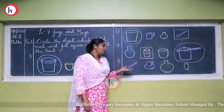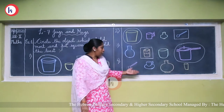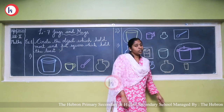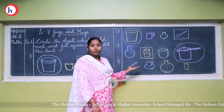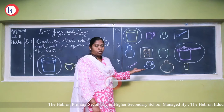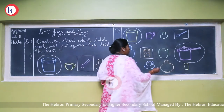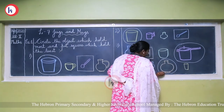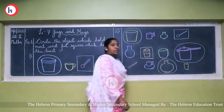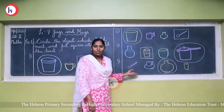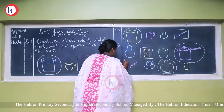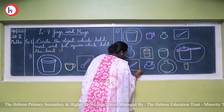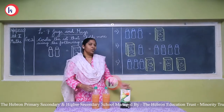Now the fourth set — we have a spoon, a cup and saucer, a pot, and a glass. Which one holds the most? We can store the most liquid in the pot, so we circle the pot. The least quantity is held by the spoon — it stores very less. So children, we are now moving to the second topic.